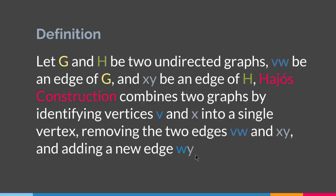To summarize: Hajos Construction is a binary operation that takes two undirected graphs G and H and produces a new one. If VW is an edge of G and XY is an edge of H, Hajos Construction merges vertices V and X into a single vertex, removes the two edges VW and XY, and adds a new edge WY to give us a new graph. That is Hajos Construction, and with this we come to the end of this lecture.